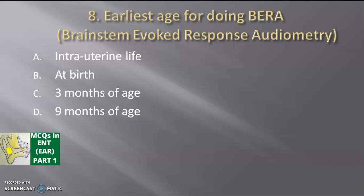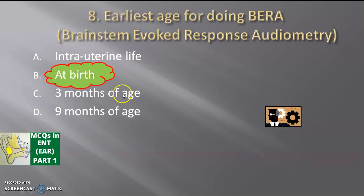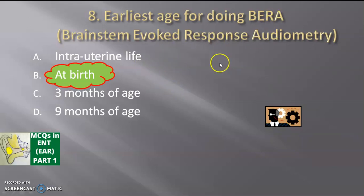Next, the earliest age for doing BERA (brainstem evoked response audiometry) — options: intrauterine life, at birth, three months of age, or six months of age? The answer is at birth. BERA does not require the child to coordinate. Unlike rinne's test or weber's test, no patient interaction is needed. Performing BERA at birth can prevent deaf-mutism; if a child has hearing loss, early detection avoids progression to mutism.